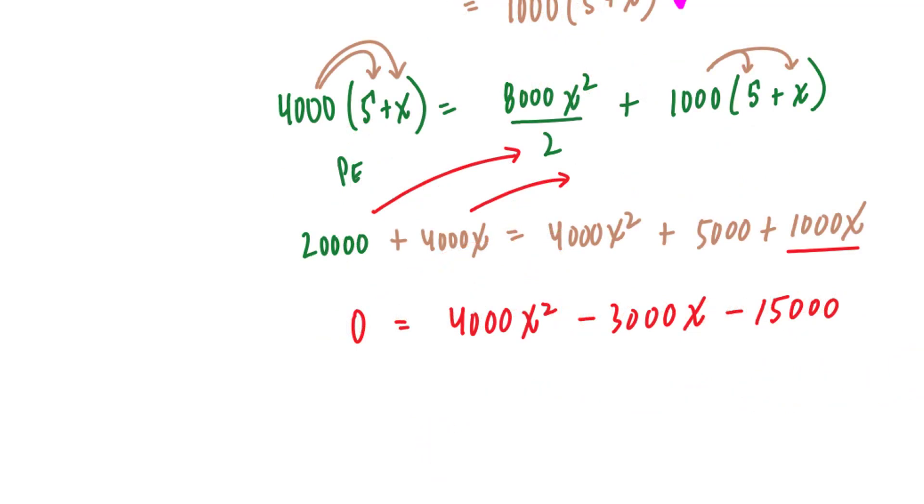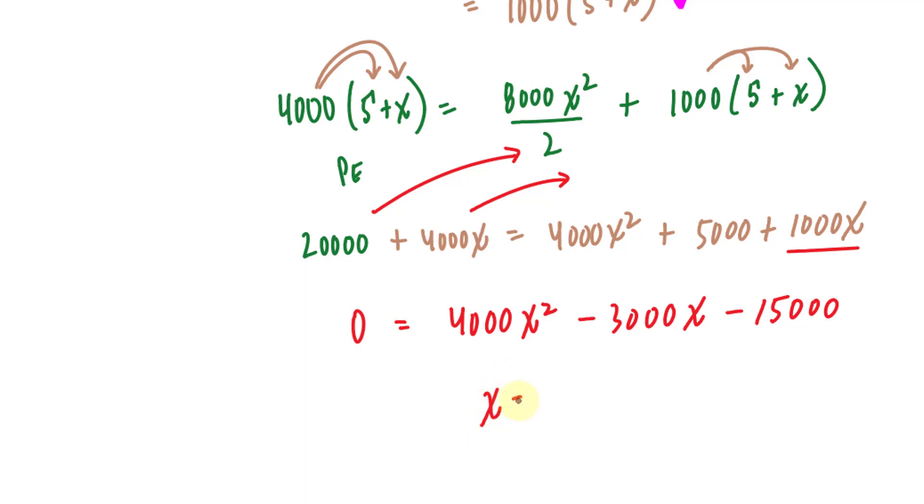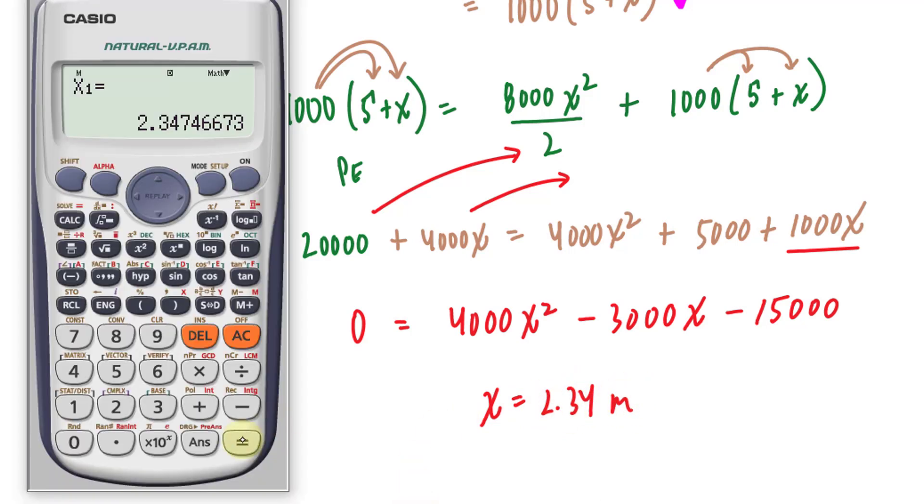Using the quadratic formula on my calculator, I have a feature that enables me to find the roots of a quadratic. I'll type in 4,000, negative 3,000 for my B term, and negative 15,000 for my C term. And I end up with two x values, one being 2.34, so x = 2.34 meters, and the other x value being negative 1.59.